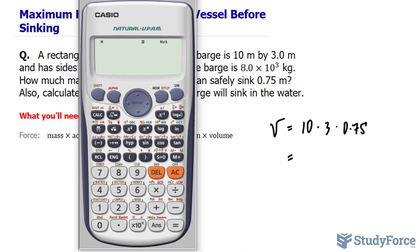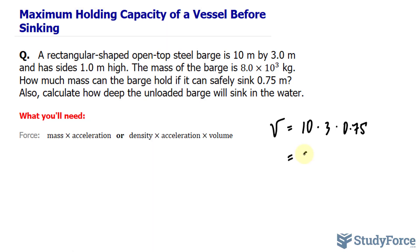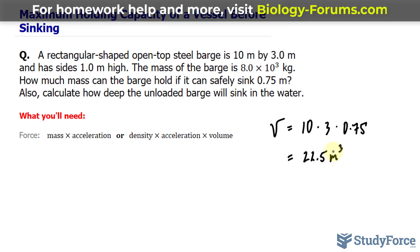Multiplying all this out will be the amount of water that gets displaced. So we have 22.5 meters cubed worth of water displaced when this much of the barge gets placed into the water.